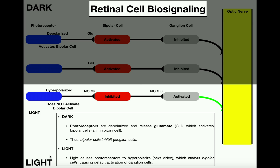Now we flip a light switch on. In the light, everything is opposite. The photoreceptor cell is hyperpolarized and therefore inhibited — it does not release glutamate. So it does not activate the bipolar cell, and the bipolar cell is now inhibited. The bipolar cell, if activated, would inhibit the ganglion cell — but since the bipolar cell is inhibited, it can no longer inhibit the ganglion cell. By default, the ganglion cell becomes activated and transmits signals to the optic nerve, allowing you to perceive that there is light.